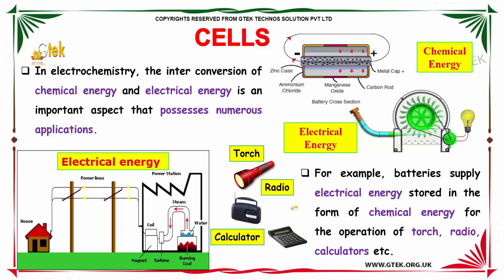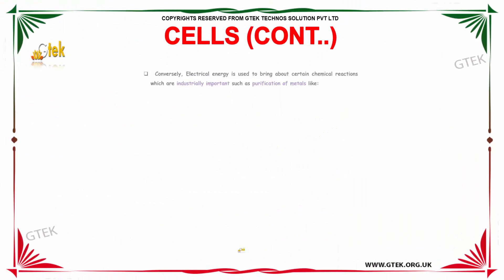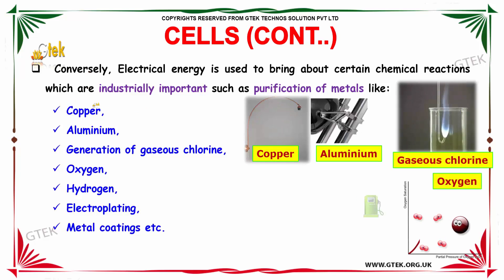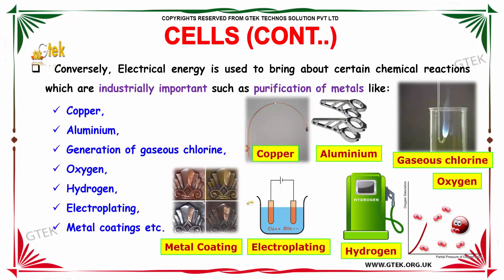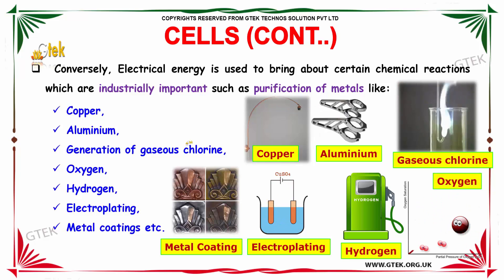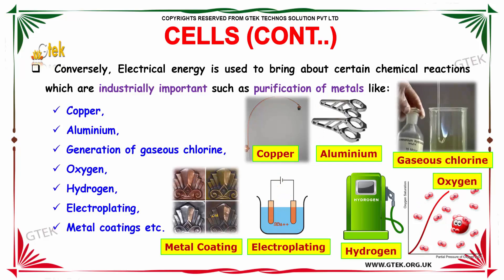For example, batteries supply electrical energy stored in the form of chemical energy for the operation of a torch, radio, calculators, and so on. Conversely, electrical energy is used to bring about certain chemical reactions which are industrially important, such as purification of metals like copper and aluminium, generation of gaseous chlorine, oxygen, hydrogen, electroplating, metal coatings, and so on.